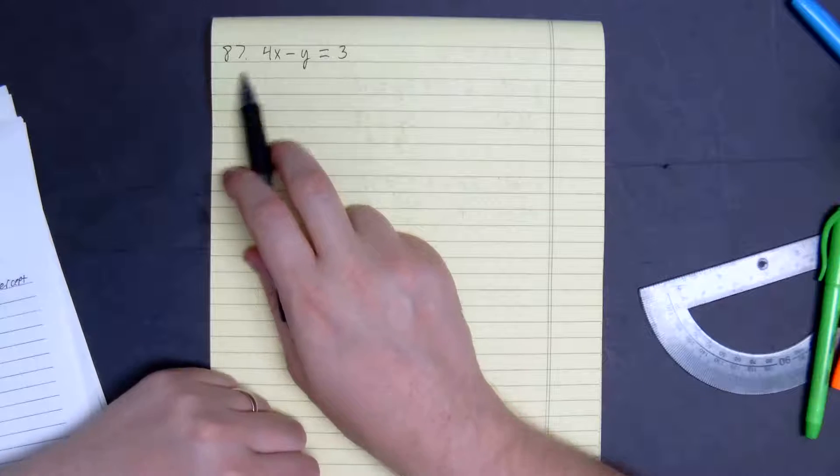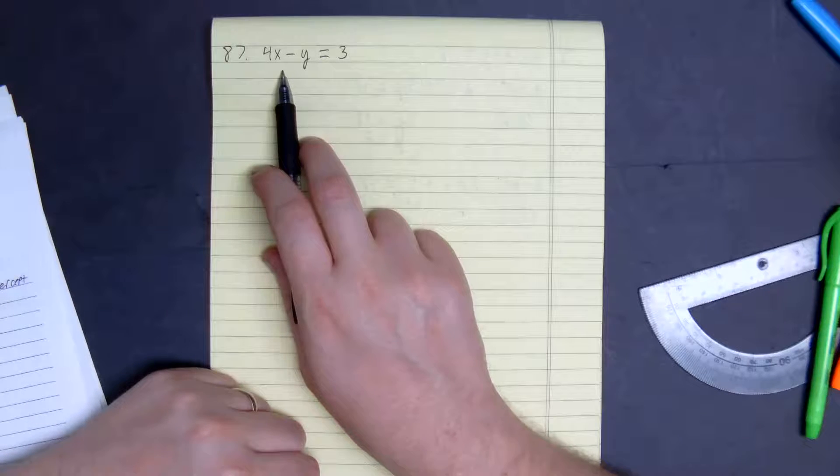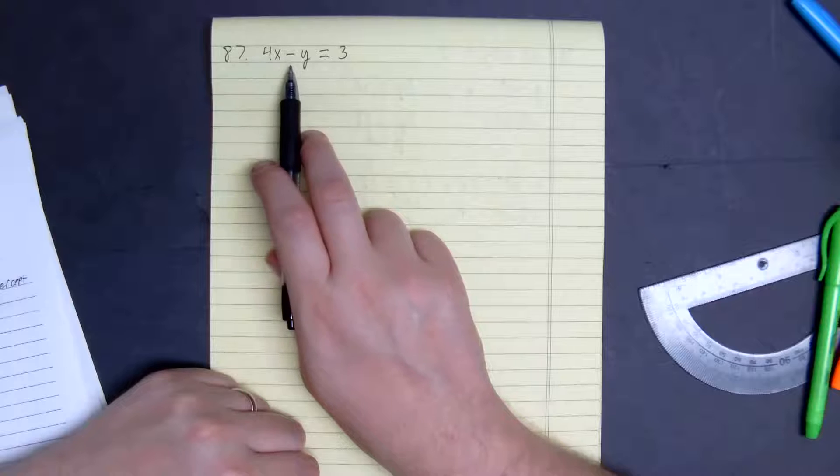Number 87 wants us to split this into slope-intercept form, identify the y-intercept and the slope, and graph it.